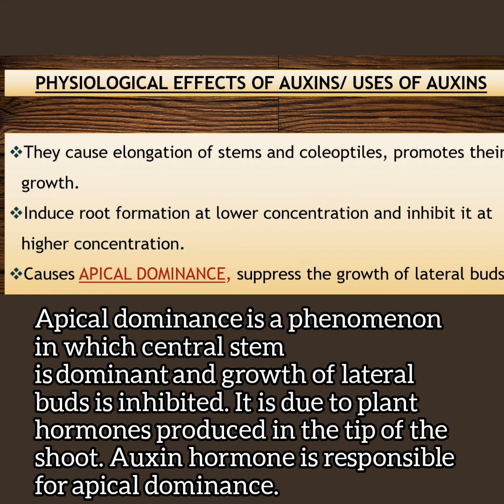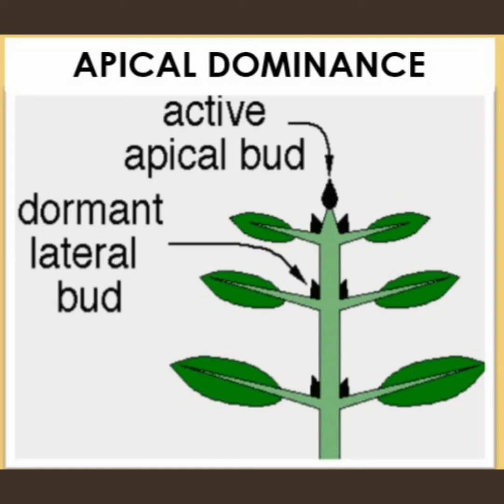This is why gardeners trim rose plants, crotons, and other plants — by cutting the apical tip, they remove apical dominance and encourage lateral bud growth.